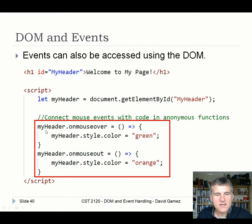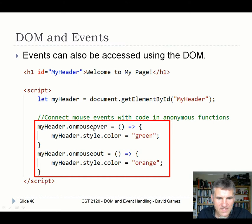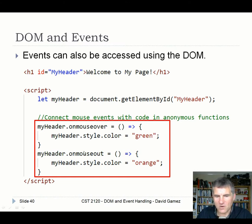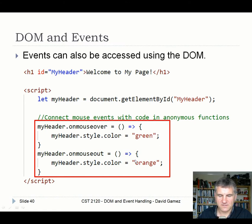So in this case, when the onmouseover event is triggered by the header — when you put a mouse over the header — it's going to call this code and change the color to green. And when the mouse moves out of that element, it's going to change the color back to orange.